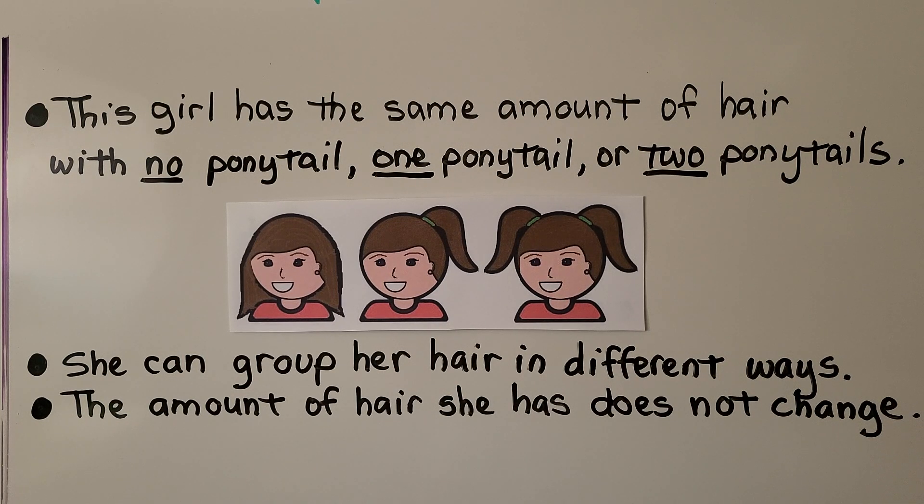This girl has the same amount of hair with no ponytail, one ponytail, or two ponytails. She can group her hair in different ways. The amount of hair she has does not change.